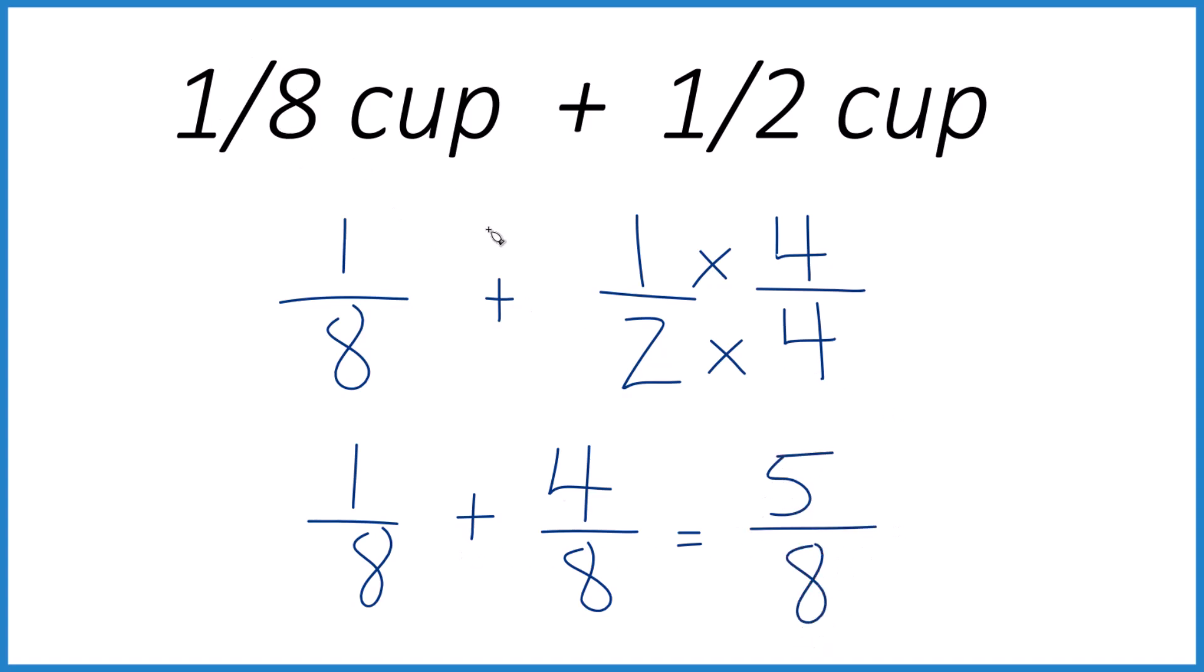So 1 eighth of a cup plus 1 half of a cup, that gives us 5 eighths of a cup, which is a little more than a half a cup. Well, it's an eighth of a cup more.